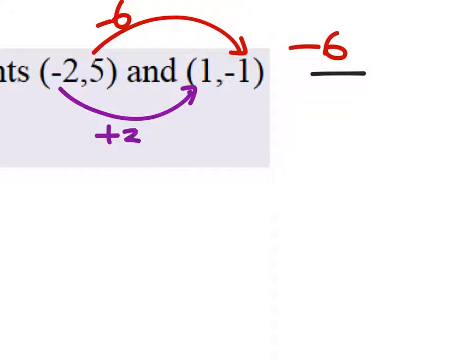From negative 2 to 1, you'd have to add 3, so that's our denominator. We do have to find the slope first, by the way. This can be simplified just to a negative 2 right there, which will help us.